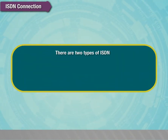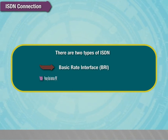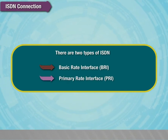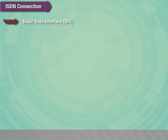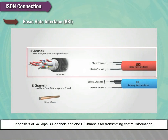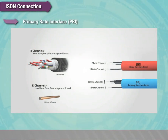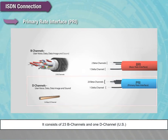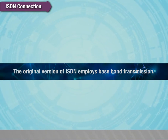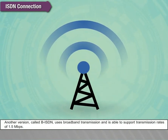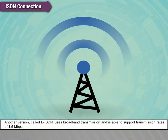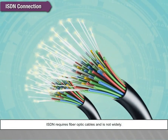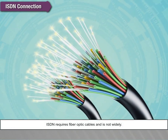There are two types of ISDN: Basic Rate Interface (BRI) and Primary Rate Interface (PRI). BRI consists of two 64 kbps B channels and 1 D channel for transmitting control information. The original version of ISDN employs baseband transmission. Another version called B-ISDN uses broadband transmission and is able to support transmission rates of 1.5 Mbps. ISDN requires fiber optic cables and is not widely used.